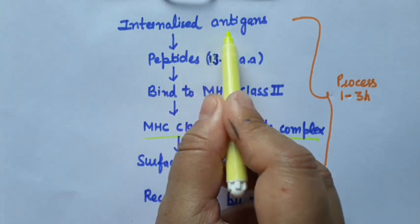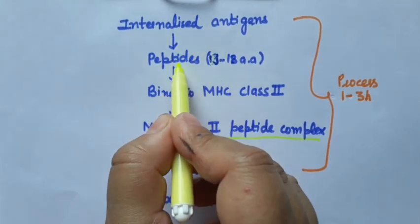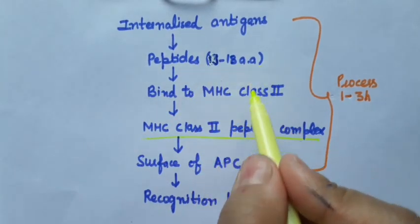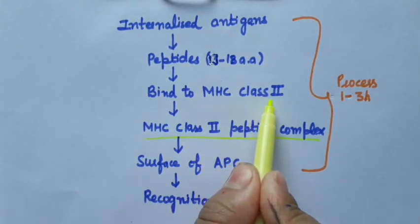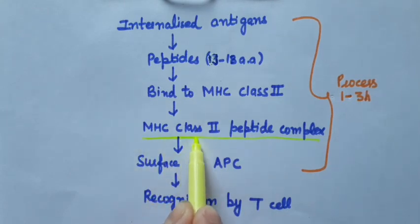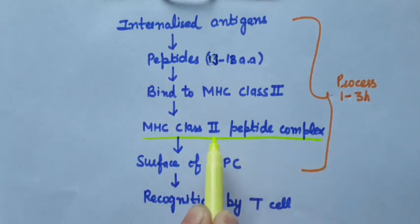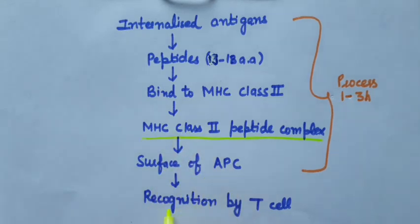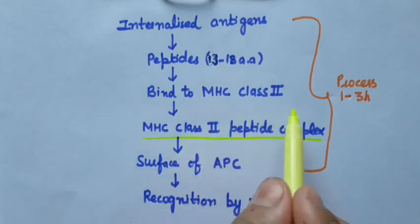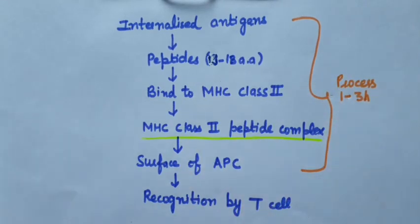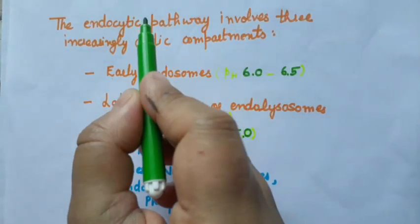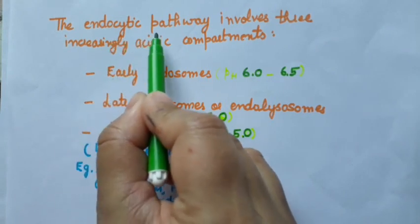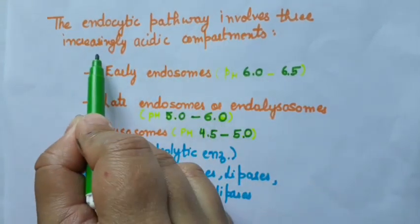When the antigens are internalized they are broken down into peptides about 30 amino acids long. These peptides then bind to MHC class 2 molecules, forming MHC class 2–peptide complexes. These complexes are then transported to the surface of the antigen presenting cell for recognition by the T cell. This whole process is completed within a time of 1 to 3 hours.